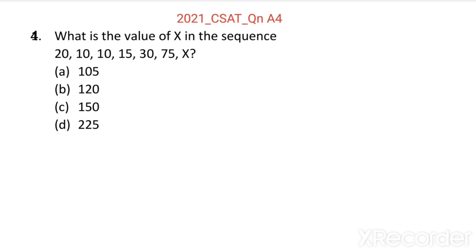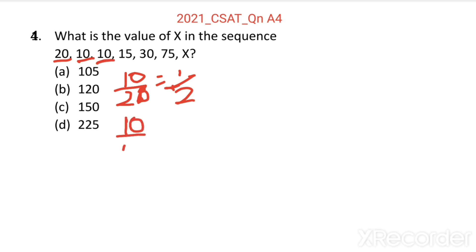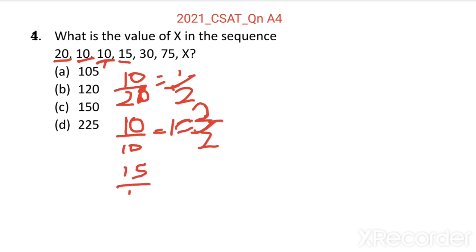Here in this sequence, the sequence is progressing by the second term divided by first term: 10 by 20 equal to 1 by 2. Then third term 10 divided by second term 10 equal to 1, which we can write as 2 by 2. Then fourth term 15 divided by third term 10 — 15 divided by 10 — this is equal to 3 by 2.